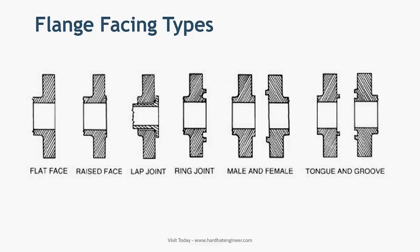Male, female, and tongue and groove flanges are always used in pairs. One side flange has an extended portion which fits into the opposite side flange, which has a matching groove. This type of flange is not used in process piping.